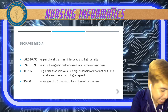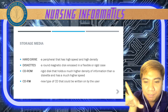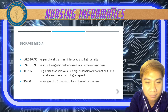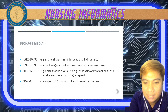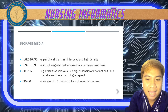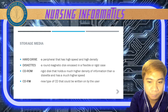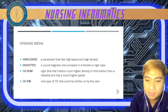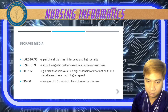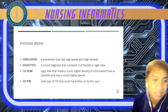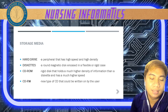We also have diskettes — a round magnetic disk encased in a flexible or rigid case. We also have CD-ROM, a rigid disk that holds a much higher density of information than a diskette and has a much higher speed. We also have CD-RW or rewritable CD, a new type of CD that can be written on by the user. Unlike CD-ROM, the CD-RW is rewritable so files can be deleted and the disc reused.